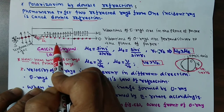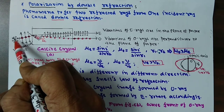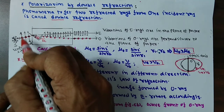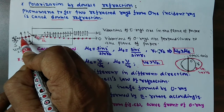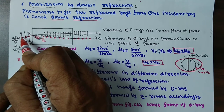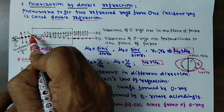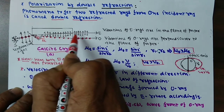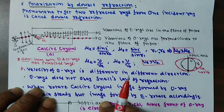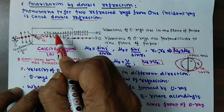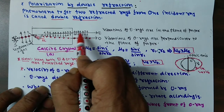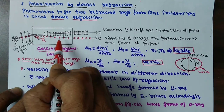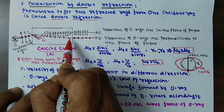Suppose this one is a calcite crystal — it is a double refracting material. This one is unpolarized light, vibrating in all directions. These arrows indicate vibrations parallel to the plane of paper, and these dots indicate electric field vectors vibrating perpendicular to the plane of paper — this is unpolarized light. When it is incident on the calcite crystal, it will be divided into an extraordinary ray and an ordinary ray. For the E ray, the vibration of the electric field vector is parallel to the plane of paper. For the ordinary ray, the vibration of the electric field vector is perpendicular to the plane of paper, indicated by dots.